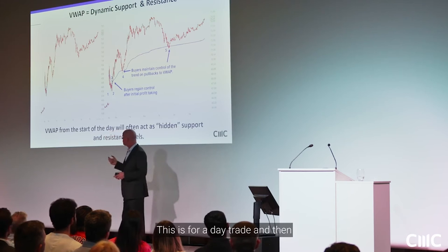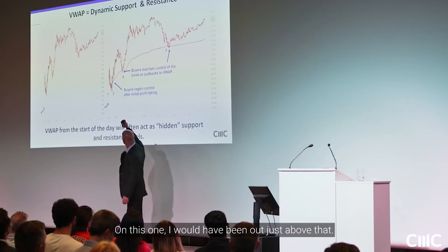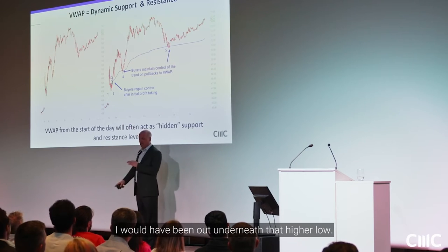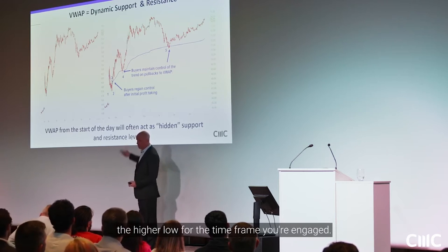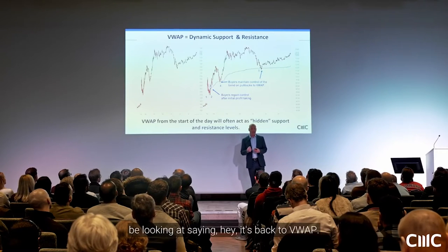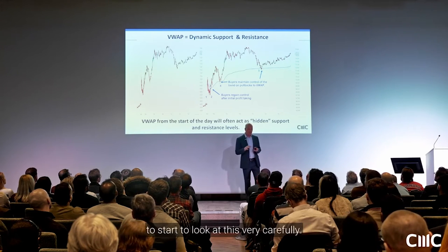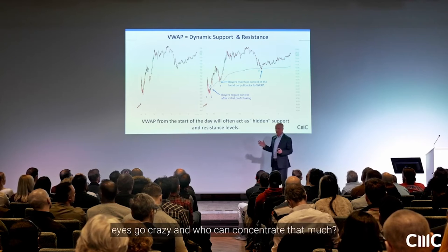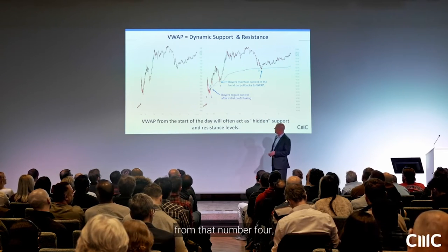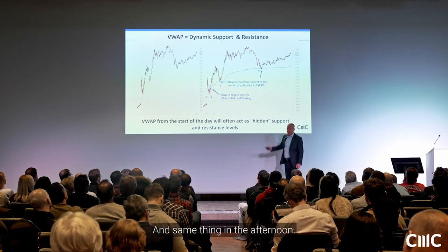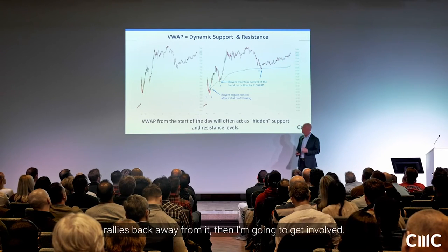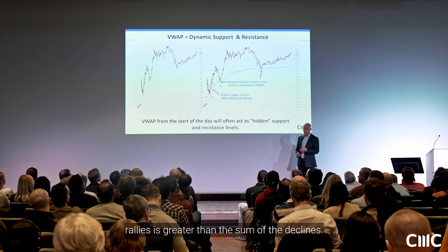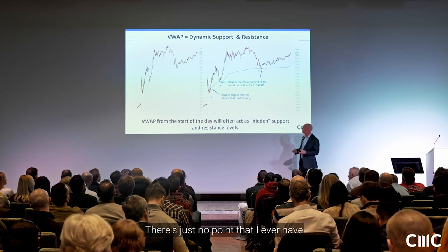As it breaks out to the high of the day and runs that first dollar quickly, I'll often sell my first third because we're still in the early morning period where things can reverse. I reduce my risk, then see if I can hold longer. I'd be out just above the first lower high once it breaks a lower low and comes down to the VWAP — raising my stop underneath the higher low. As it pulls back to VWAP at point four, I'm not buying there, but watching carefully. As it rallies away I buy again with my stop under point four. Nowhere on this chart would I short — the sum of rallies exceeds the declines; we're above VWAP.